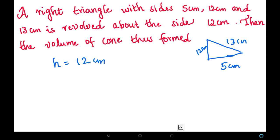Then in the base there is 5 cm which is rolled, so the radius will be 5 cm. Now the volume of this cone is 1/3 π r² h.